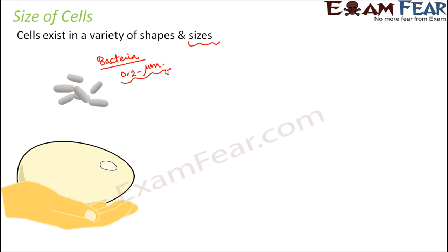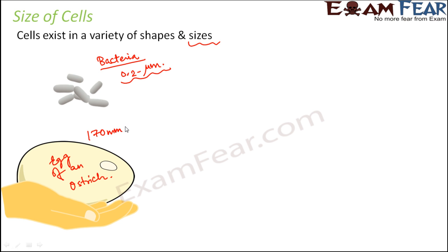Now if you talk about a large cell, the largest cell is the ostrich egg. This is the egg of an ostrich, and you can imagine its size relative to the size of an adult palm — it completely fills your palm. The size of this ostrich egg goes up to that range, measuring 170 mm by 130 mm. That is the dimension of an ostrich egg.